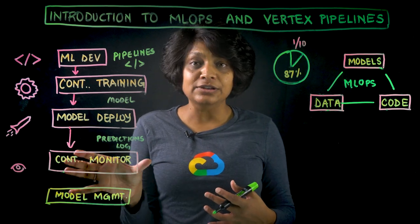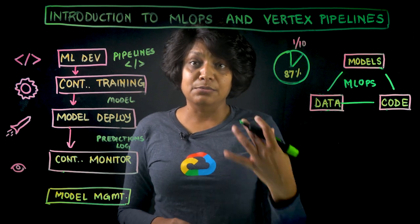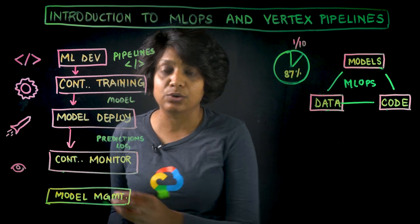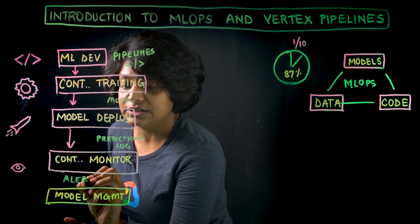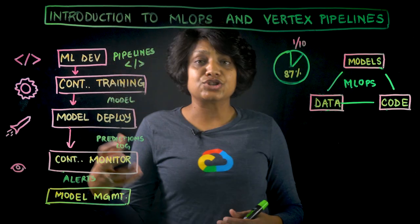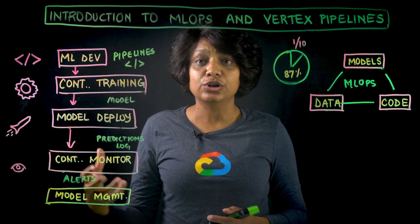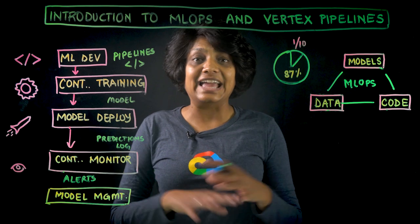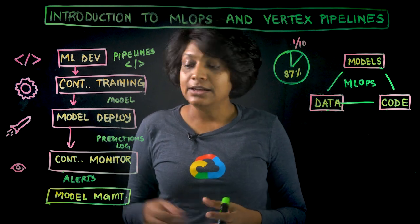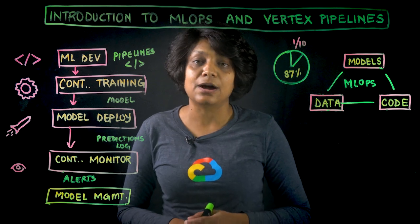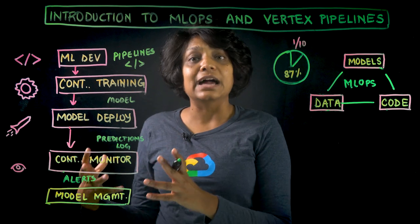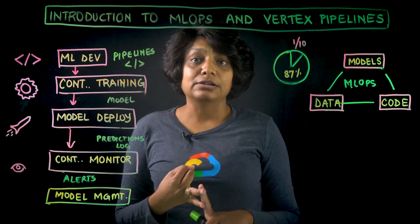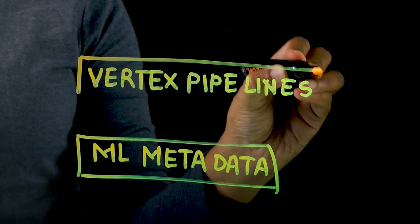The output of continuous monitoring — because you are continuously monitoring the model — is alerts that go out to the team so they can continuously measure and monitor what the model's performance is looking like: whether it is degrading, triggering rollbacks, or requiring A-B testing of candidate models. The model management and governance capabilities span across the entire framework, including features such as model registry, model approvals, and model provenance.